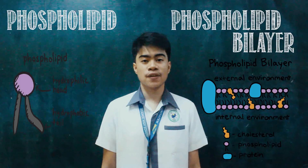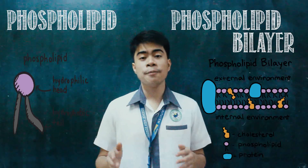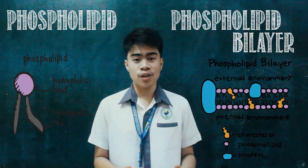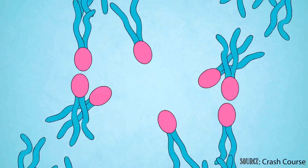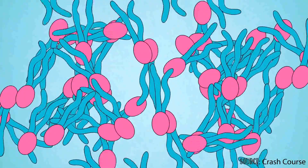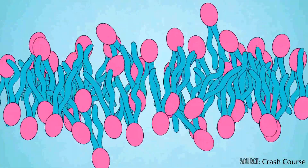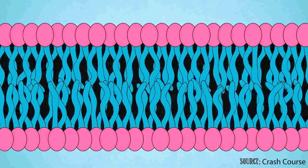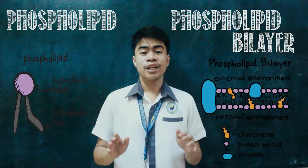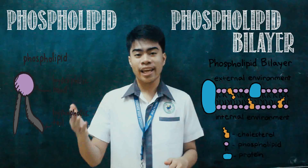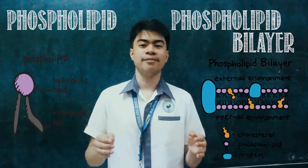Next is the phospholipid. The phospholipid bilayer's function is to keep a barrier between the cell and the outside. It also stores and transports a variety of proteins that are essential to cell function. It controls what enters and exits the cells.